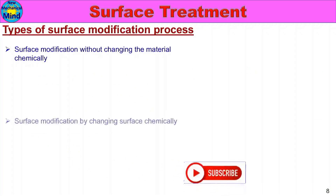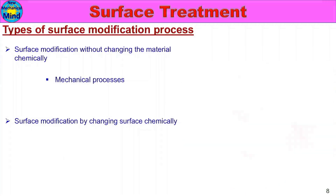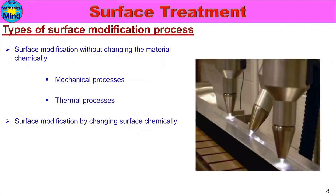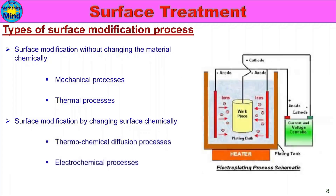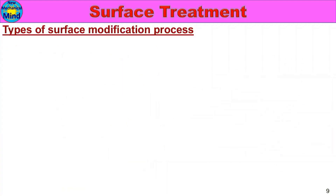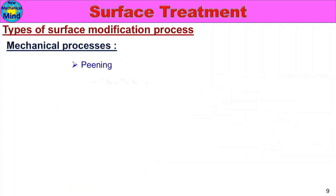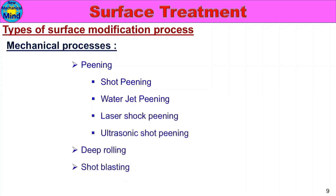Types of surface modification: surface modification without changing the material chemically, and surface modification by changing surface chemically. These include mechanical processes and chemical conversion coatings.